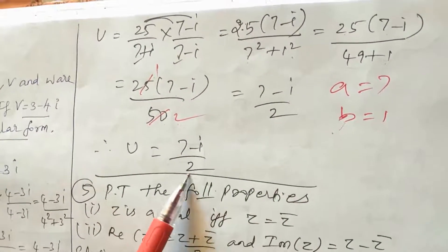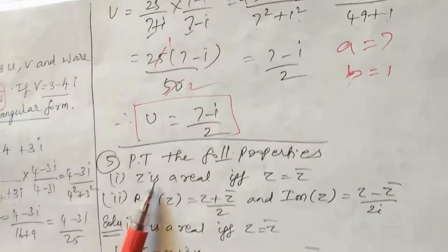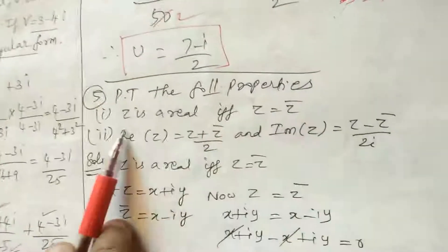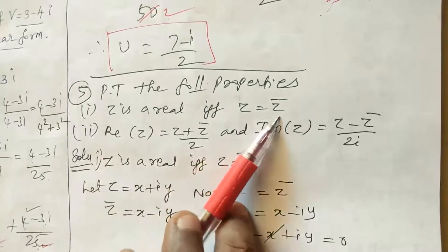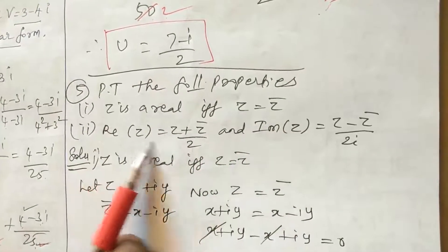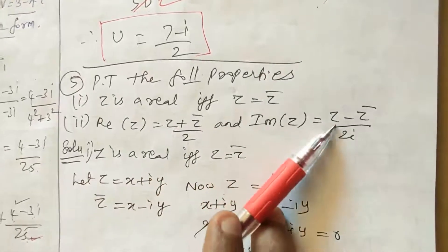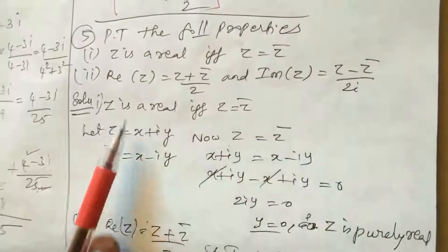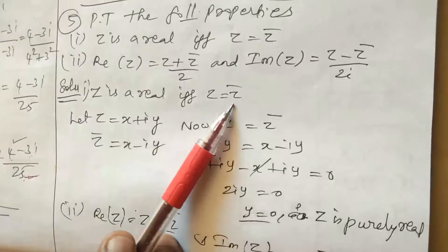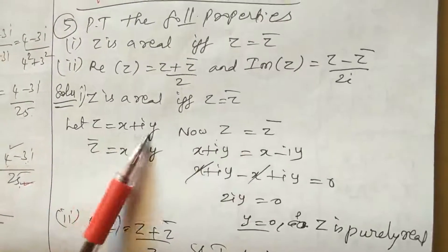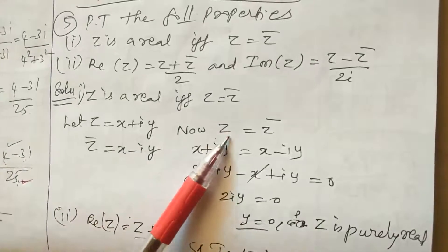Fifth question: Prove the following properties. First, Z is real if and only if Z equals Z bar. Second, the real part of Z equals (Z plus Z bar) divided by 2. And the imaginary part of Z equals (Z minus Z bar) divided by 2i. Let Z equal x plus iy, and Z bar equal x minus iy.